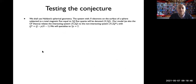To test the conjecture, Haldane's spherical geometry is used. Here, N electrons are on the surface of a sphere subjected to a total magnetic field of 2Q flux quanta, where 2Q is an integer. This system is denoted by N, 2Q.